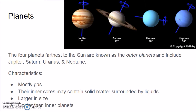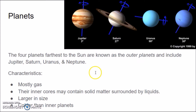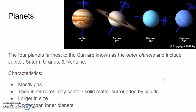The four planets farthest from the Sun are called the outer planets: Jupiter, Saturn, Uranus, and Neptune. These planets are mostly made up of gas — not really solid, though they may have a solid core. Their inner cores may contain solid matter surrounded by liquids, but we're not quite sure since we've never been to one of these planets. They are much, much larger in size — Earth would fit right inside the giant red spot on Jupiter. And they are much colder than the inner planets because they're farther away from the Sun.